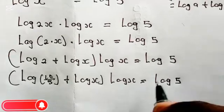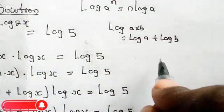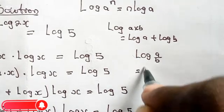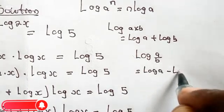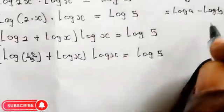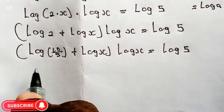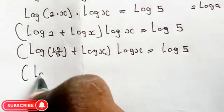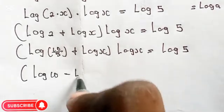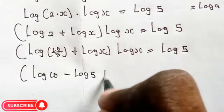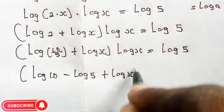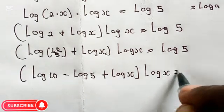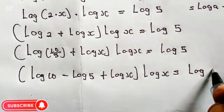Now recalling the quotient property of logarithms: log(a/b) equals log a minus log b. Using this property, we write log(10/5) as log 10 minus log 5, plus log x, all in brackets, multiplied by log x equals log 5.